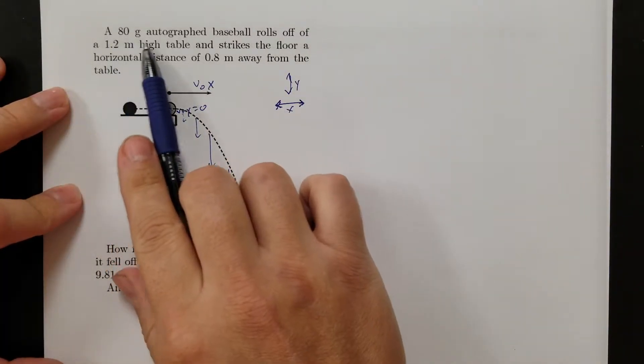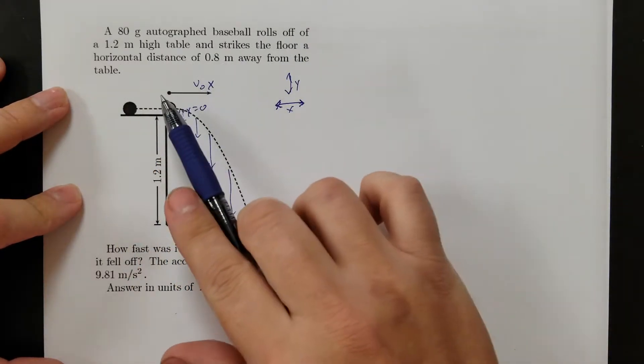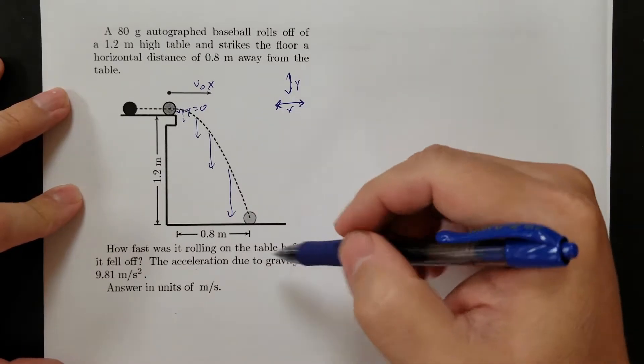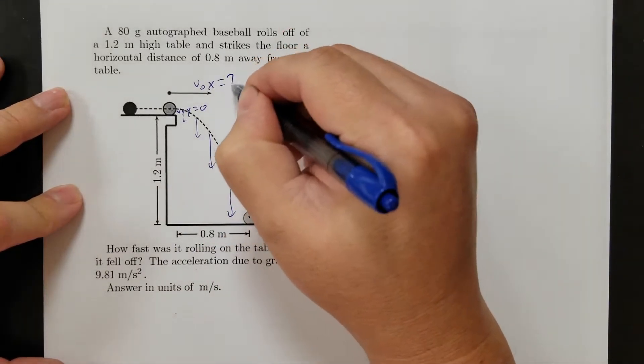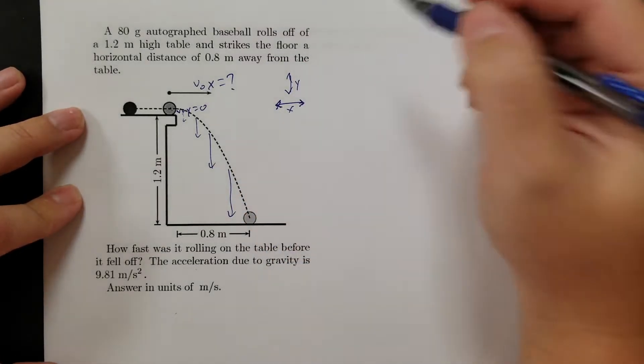So let's read this problem. An 80-gram autographed baseball rolls off a 1.2-meter-high table, strikes the floor a horizontal distance of 0.8 meters away from the table. How fast was it rolling on the table before it fell off? So we want to figure out the velocity in the x direction.